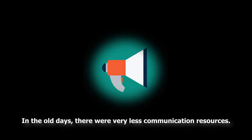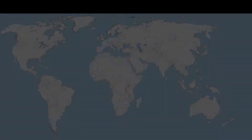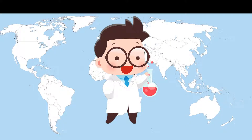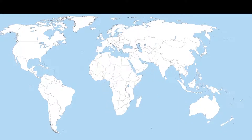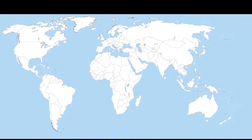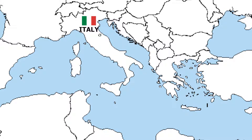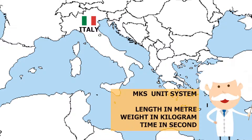In the old days, there were very less communication resources. Scientists in different countries used different units to measure the quantities. For example, in the Italian community, scientists used meter to measure length, kilogram to measure weight, and second to measure time. This unit system is called the MKS unit system.